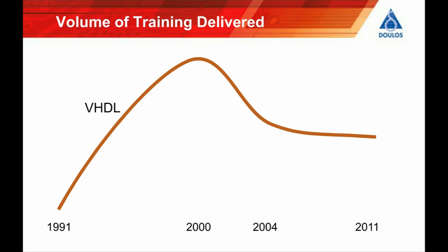You can see that training grew steadily throughout the 1990s, peaked around 2000, fell off after that point and has remained roughly steady year on year since around 2004 up to the current time. Compared to VHDL, System Verilog is a relative newcomer. We first started delivering System Verilog training around 2004 and the volume of training delivered has grown steadily year on year to the point where it's now overtaken VHDL.